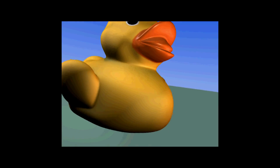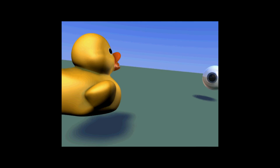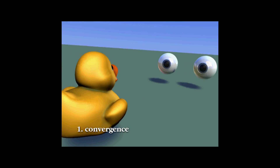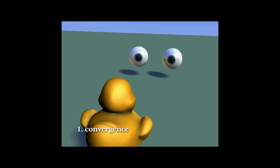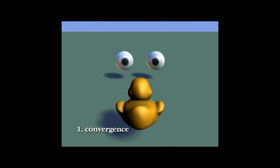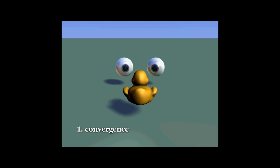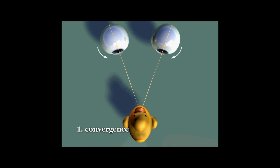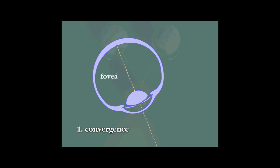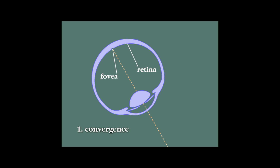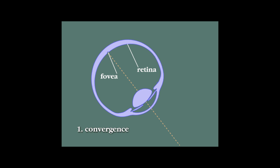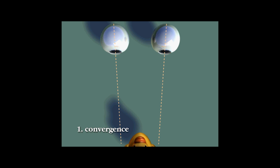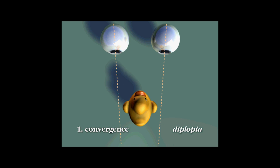Let's look at a very clever animation from the University of Toronto which shows this much better. First, as an object approaches, both eyes track it in a process called convergence. The size of the eyes in this example has been greatly exaggerated so that the subtle movement during convergence can be seen. Convergence of the eyes keeps the image of the object of interest centered on the fovea — the part of the retina where resolution is highest. If the eyes do not converge appropriately, diplopia, or double vision, occurs.